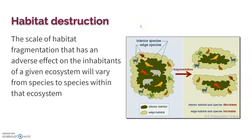Not all species react the same to fragmentation. Species that do well on habitat edges may actually benefit, but species that depend on the interior of that area do worse — perhaps due to specific light conditions or hunting space requirements. What we see with fragmentation is that interior species decrease while edge-habitat species increase.